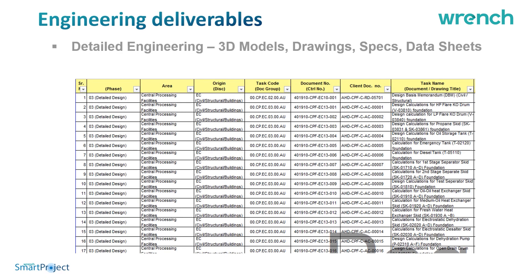The engineering workflow starts with the master deliverable list, which consists of deliverables that could be 3D models, drawings, specifications, data sheets, or method statements. These are either created as a list in Excel or in MS Project and can be imported as engineering deliverables into Smart Project.